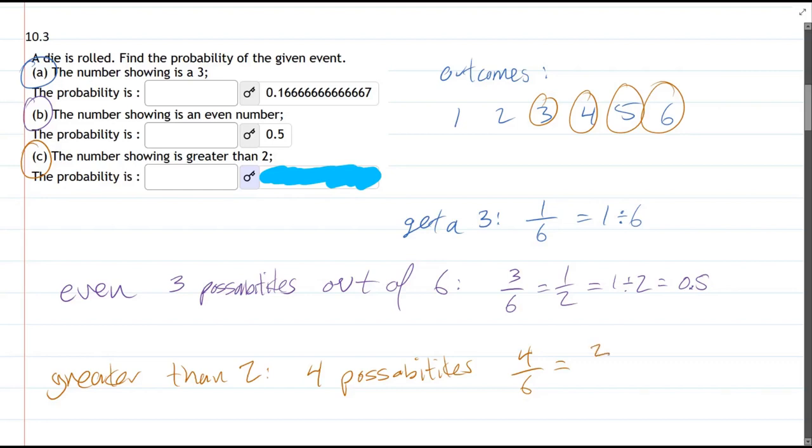Now, four out of six is two-thirds. And you can do two divided by three on a calculator. And that will be this number right here, 0.6666, et cetera.